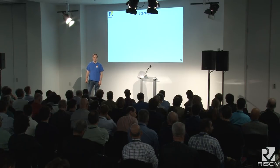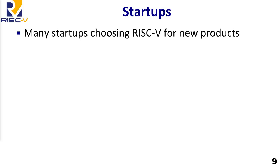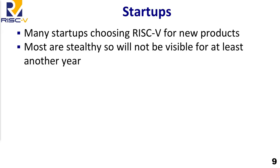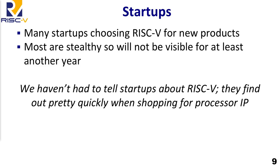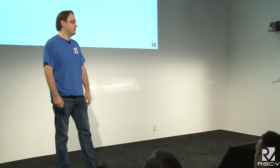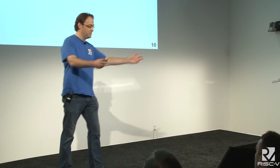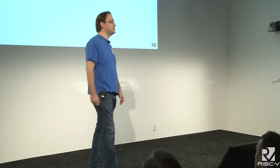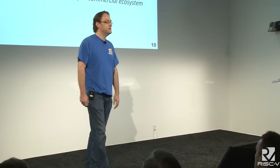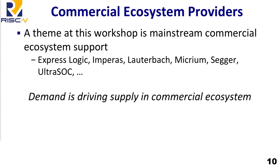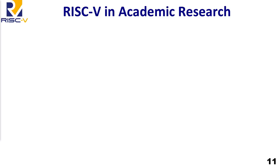Startups are very actively choosing RISC-V for their products — most are going to be stealthy so you won't hear anything for a year or two. What's interesting is we haven't had to tell startups about RISC-V; they find out very quickly once they go shopping for processor IP and they get on the RISC-V bandwagon. One theme of this workshop is you're going to see a lot of commercial tool providers supporting RISC-V — companies like Mentor, Cadence, Synopsys, Imperas, UltraSoC — they're doing this because demand is driving supply of these commercial tools.